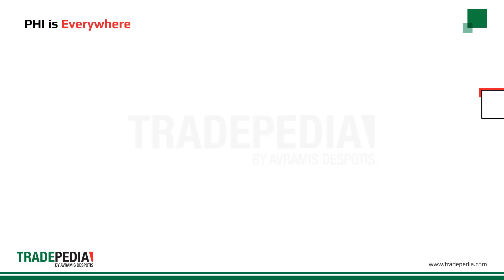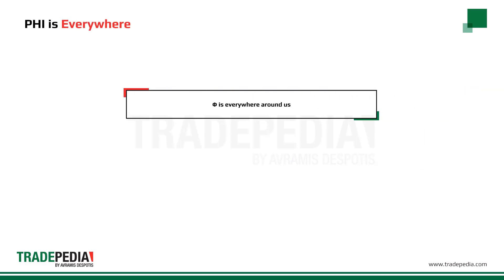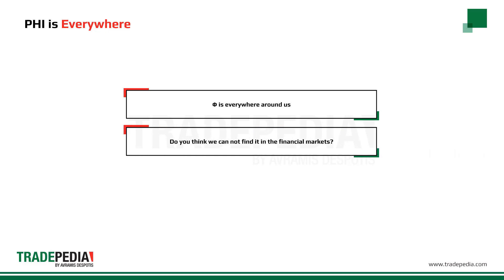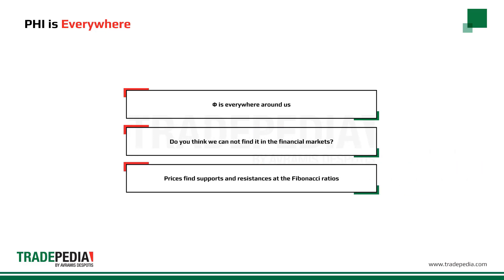Phi is everywhere around us — in the plants, the animals, the galaxy, even in our DNA. And of course, the financial market. It has been observed that prices find supports and resistances at the Fibonacci ratios.